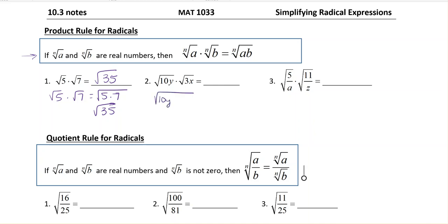you get the radical 10y times radical 3x, which gives me radical 30xy. Again, no perfect squares or anything can't be simplified. This would just be your answer.